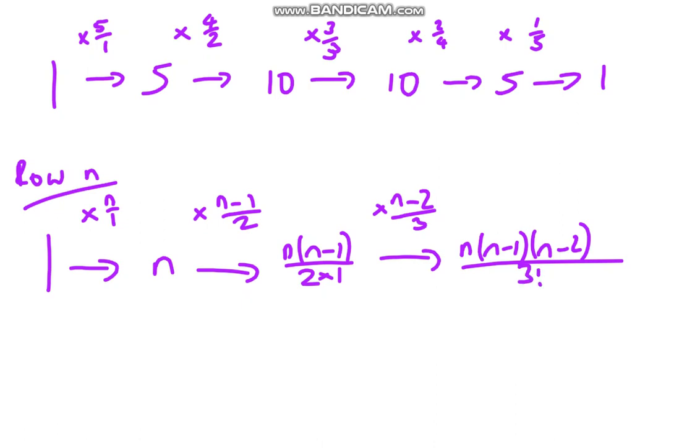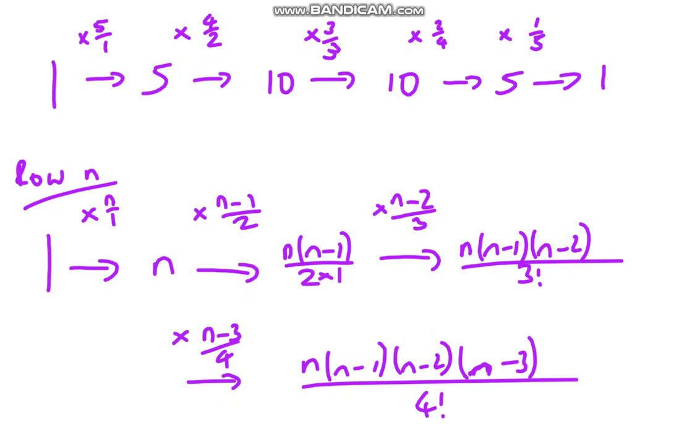Then obviously the next one, we would multiply by n minus 3 over 4. That would give us n times n minus 1 times n minus 2 times n minus 3 all over 4 factorial. And there you go, that's just how you could work out the nth row of Pascal's triangle, which of course would be very useful for binomial expansions and also for binomial probabilities. There's a little thing I thought I'd share with you. I hope you liked it.